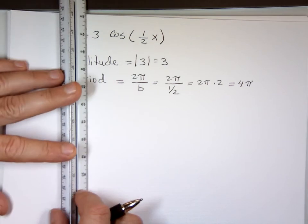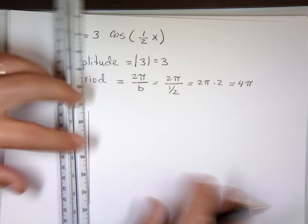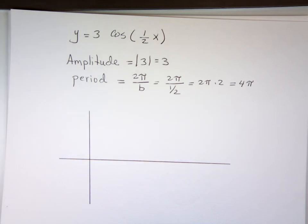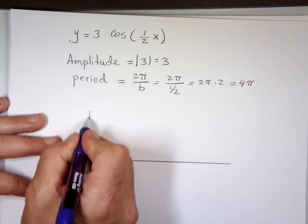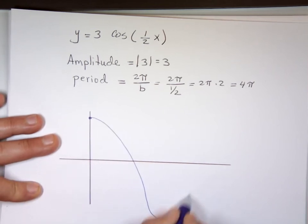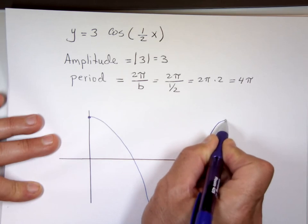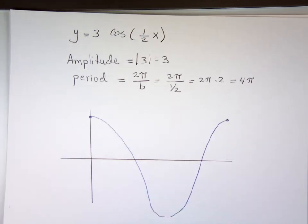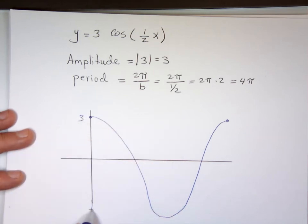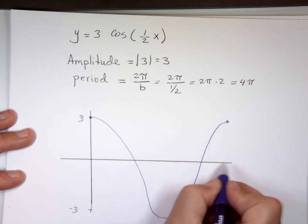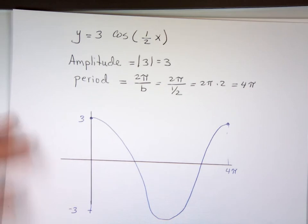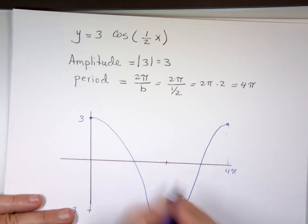So what does the graph of that look like? We know what the cosine function looks like, the karate kid. So this is going to start high. What's the height here on the y-axis? 3 and down here is negative 3. What's this value right here? That's 4 pi.